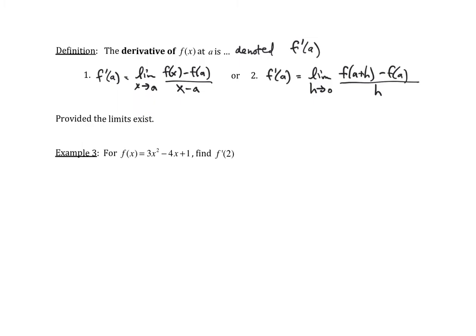I hope these two definitions really look familiar to you. The derivative f prime of a is the same as the slope of the tangent line to y equal to f of x at the point x equal to a.